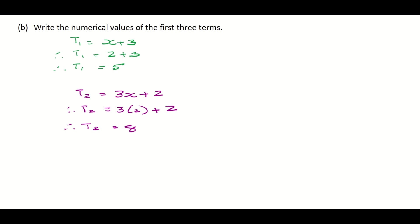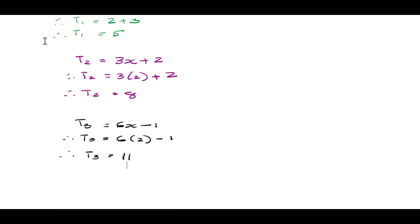And finally, term 3 was 6x minus 1. So therefore term 3 is equal to 6, remember x was 2, minus 1. That's going to give us term 3 equal 6 times 2 is 12 minus 1 is 11. So that's not the end of your question. Remember the question was to write down the numerical values of the first three terms. So once we've worked them out, you list them. The numerical values of the first three terms are 5, 8, and 11.